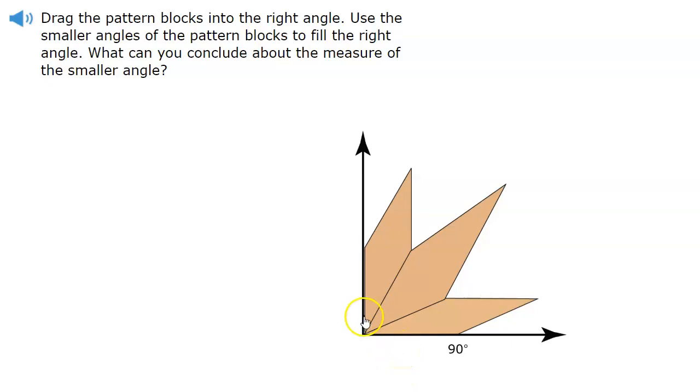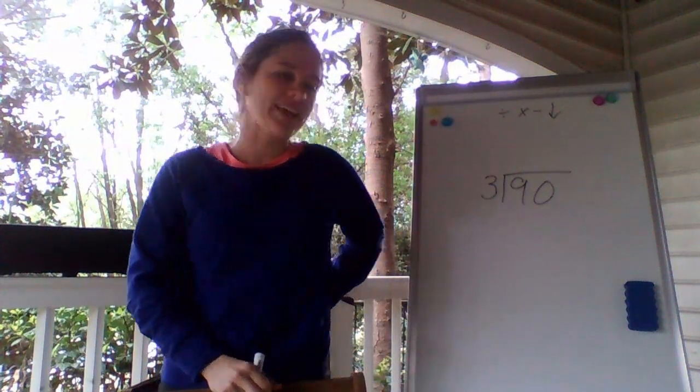Therefore, to find the angle of one acute angle you will have to do 90 divided by 3. Let's do some review on dividing.